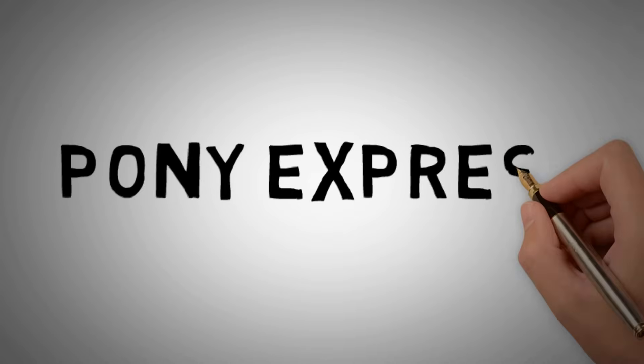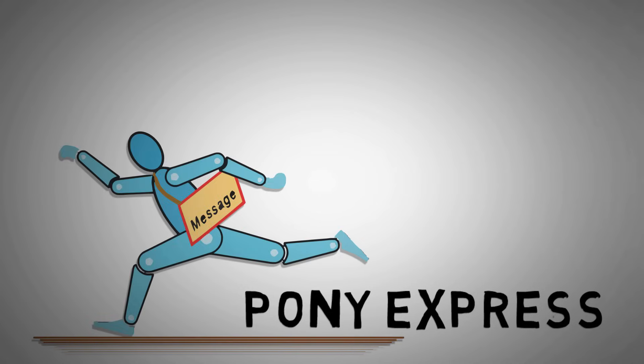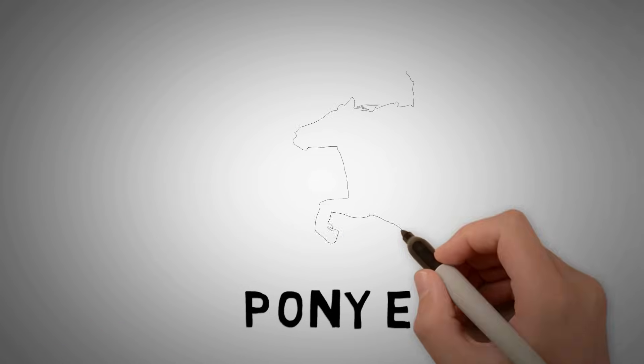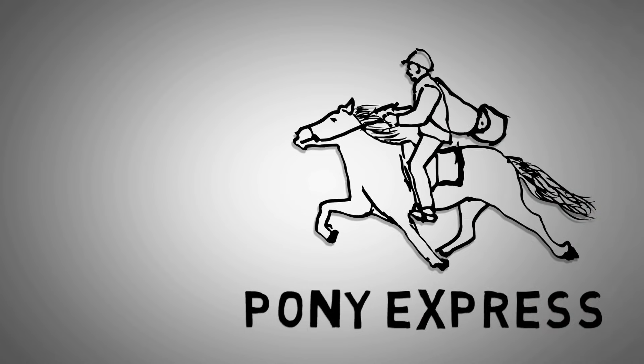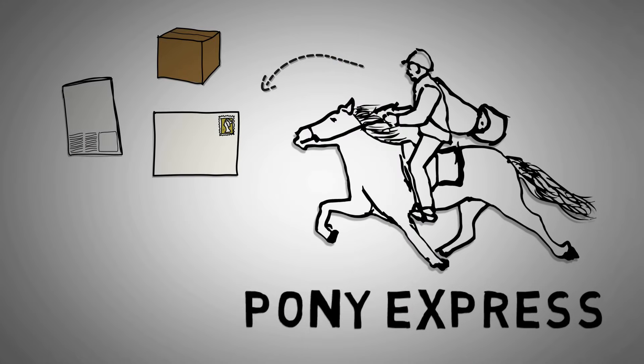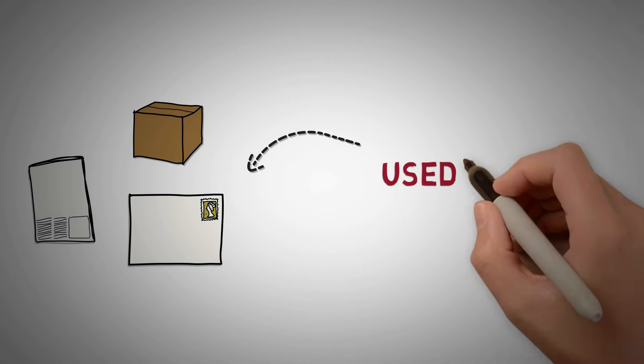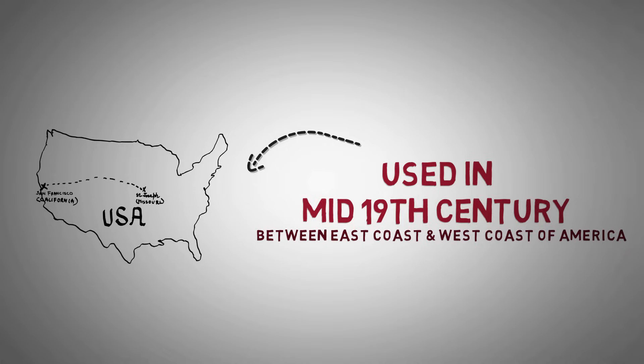Pony Express. From ancient times kings have been using human messengers to relay messages. Pony Express was the first of its kind mail service delivering messages, mails, newspapers and small packages by horseback using small relay stations. It is regarded as the first courier service. It was used in the mid-19th century to communicate between east coast and west coast of America.